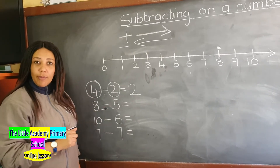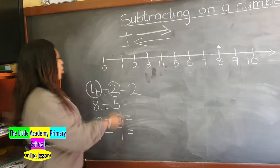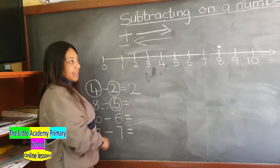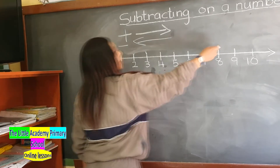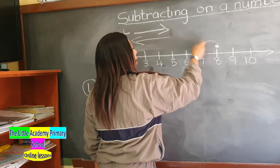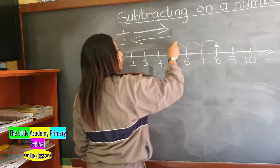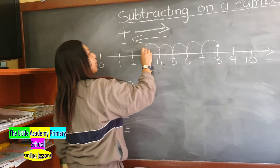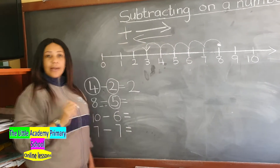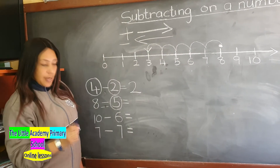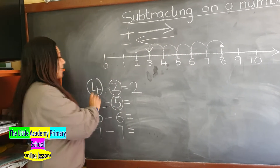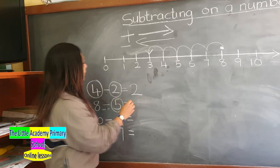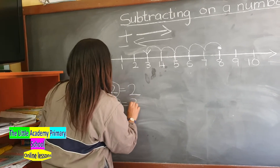And this is going to tell us that we are moving backwards because it is a subtraction sign. So how many times are we moving backwards? We are moving backwards 5 times — 1, 2, 3, 4, 5 — and we end at the number 3. So which means 8 subtract 5 is 3.